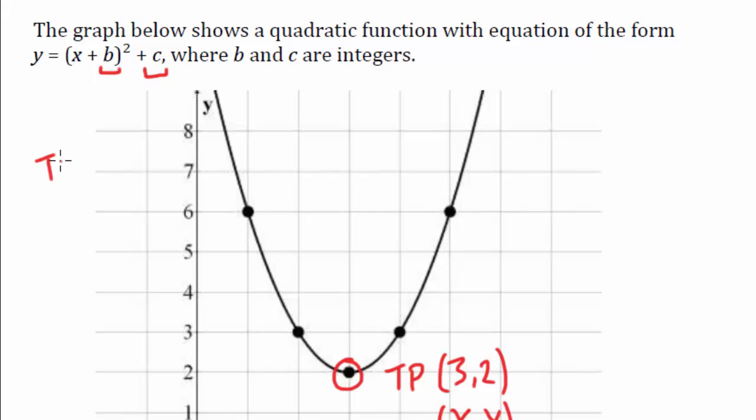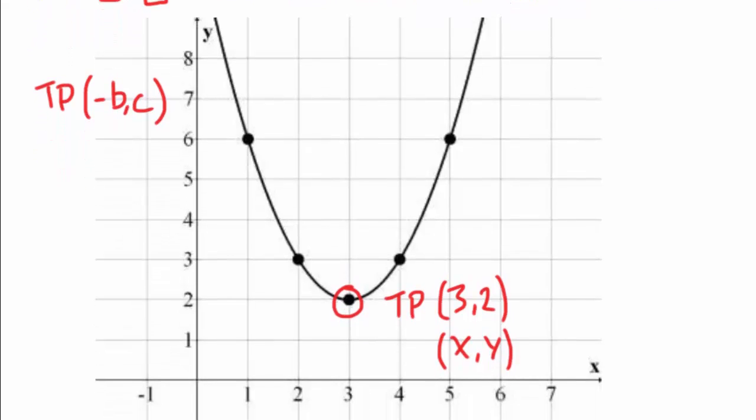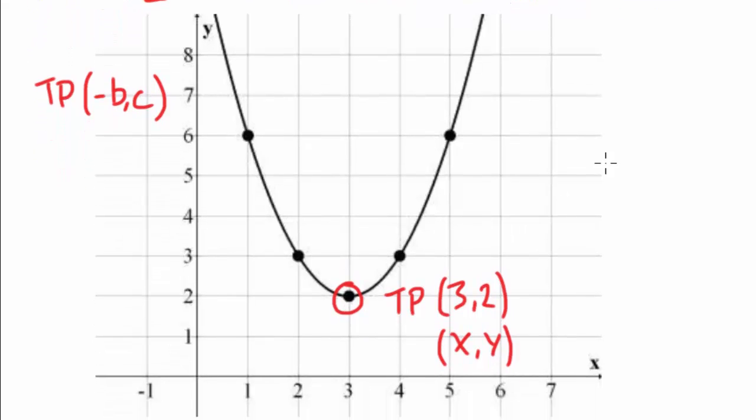These represent the turning point being at minus b and being at c. So we're essentially having to match these up. So if I show you both formulas, we've got the x coordinate for the turning point to be 3.